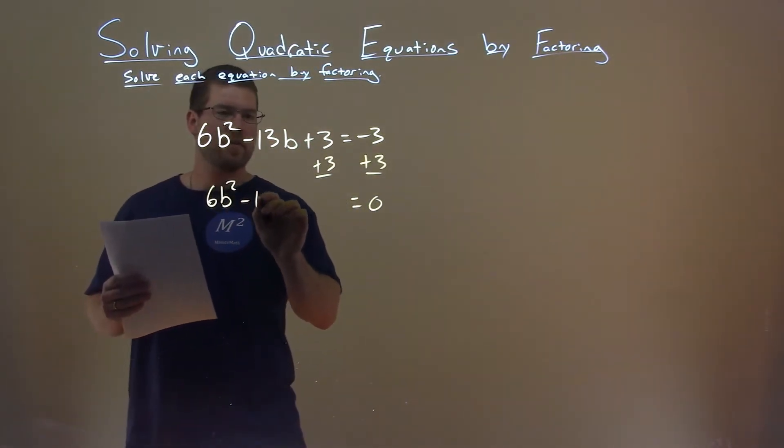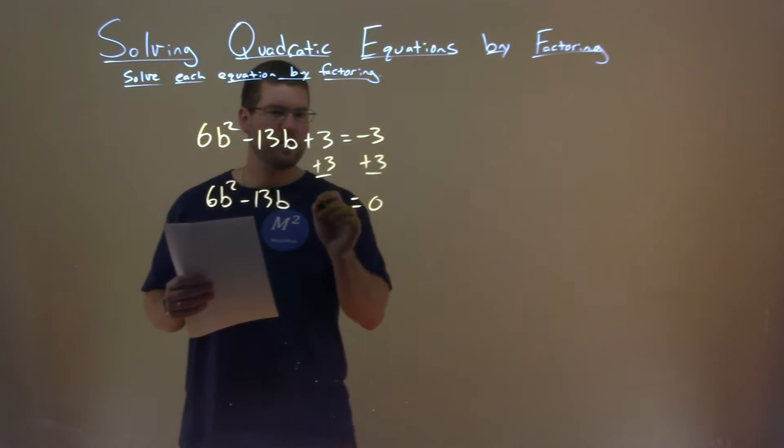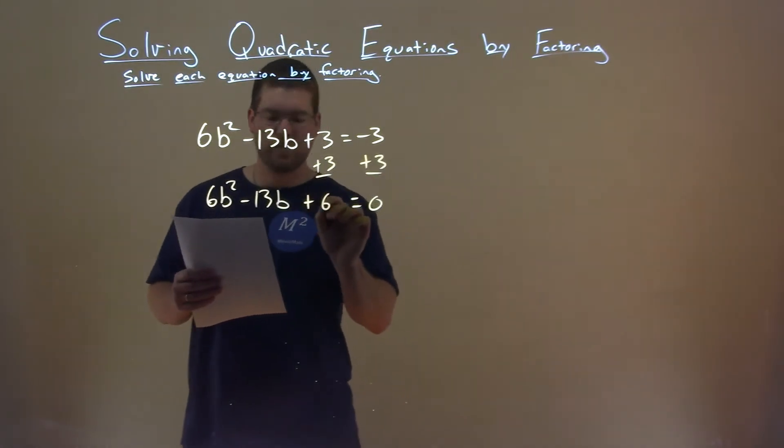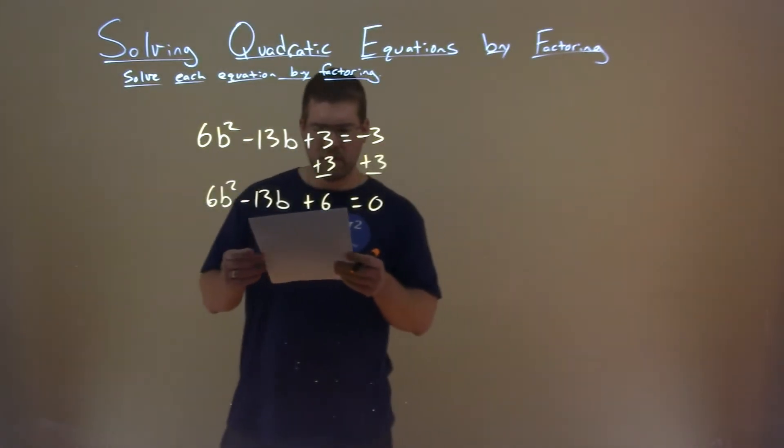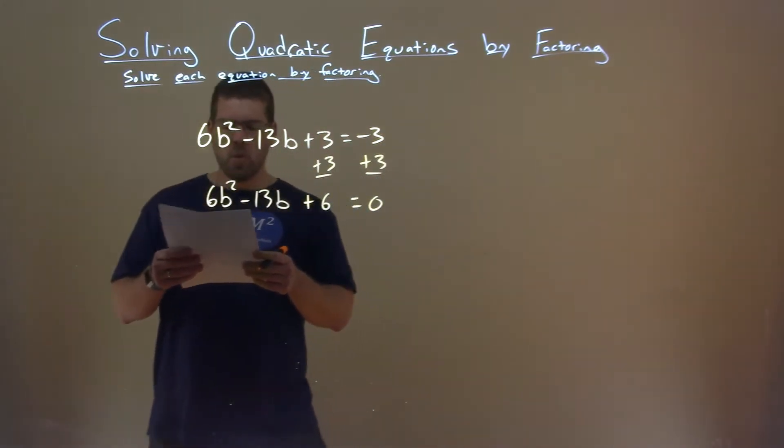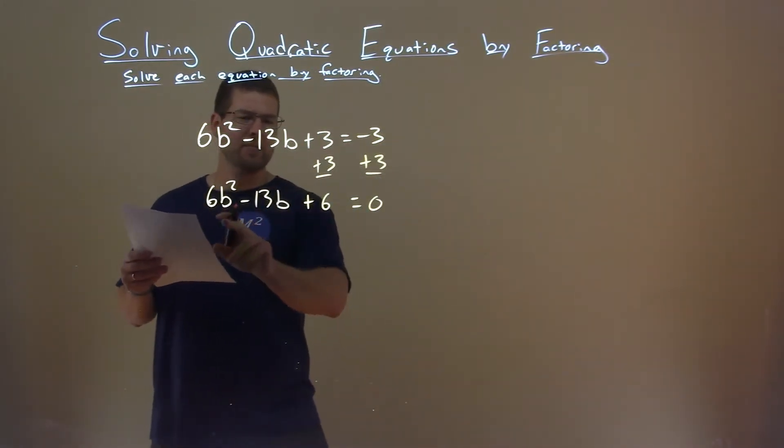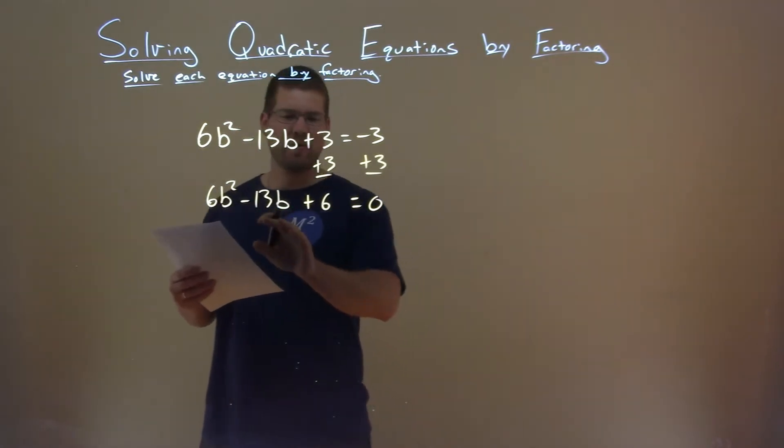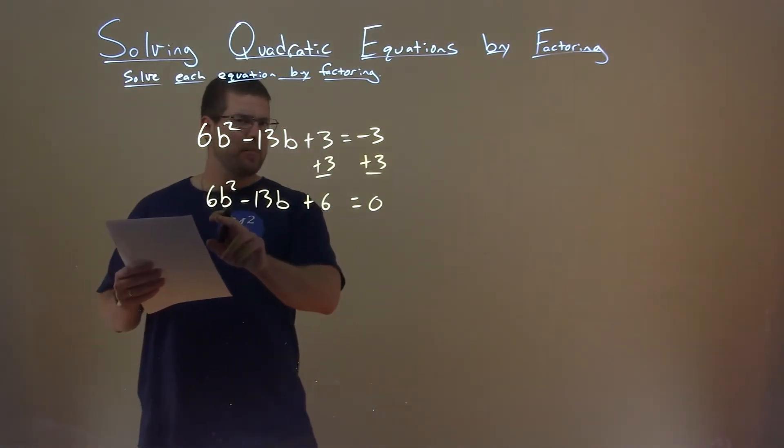6b squared minus 13b plus, well, 3 plus 3 is 6. So, 3 plus 3 is now 6. What I want to do now is I can't really simplify this right away or factor it, but I can try it by grouping.